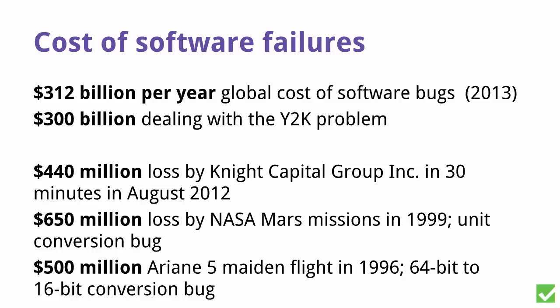Software failures are a huge problem. They cost over $300 billion a year. One particular bug cost over $300 billion — just the Y2K problem. The Knight Capital Group, which doesn't exist anymore, lost half a billion dollars in 30 minutes due to a bug in their trading software. Both the U.S. and European space agencies have also lost about that much money in just a few seconds, again due to a software error.